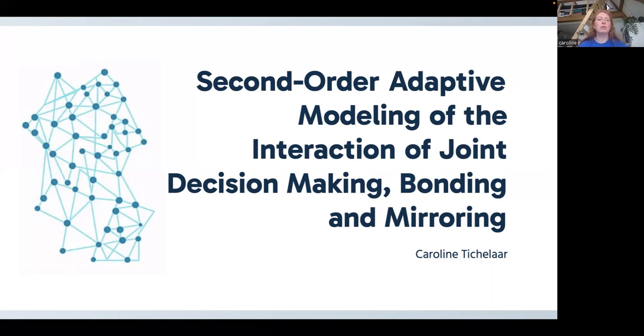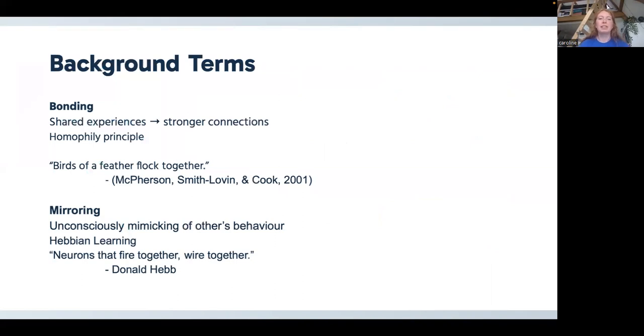Before we start talking about the model, I first want to explain a little bit about bonding and mirroring. Bonding is the principle where individuals form stronger connections when they have shared experiences. And this is in connection with the homophily principle where individuals form stronger connections when they are similar to each other in terms of, for example, demographics or interests. This could also be linked to the quote, birds of a feather flock together from McPherson, Smith, Loving, and Cook.